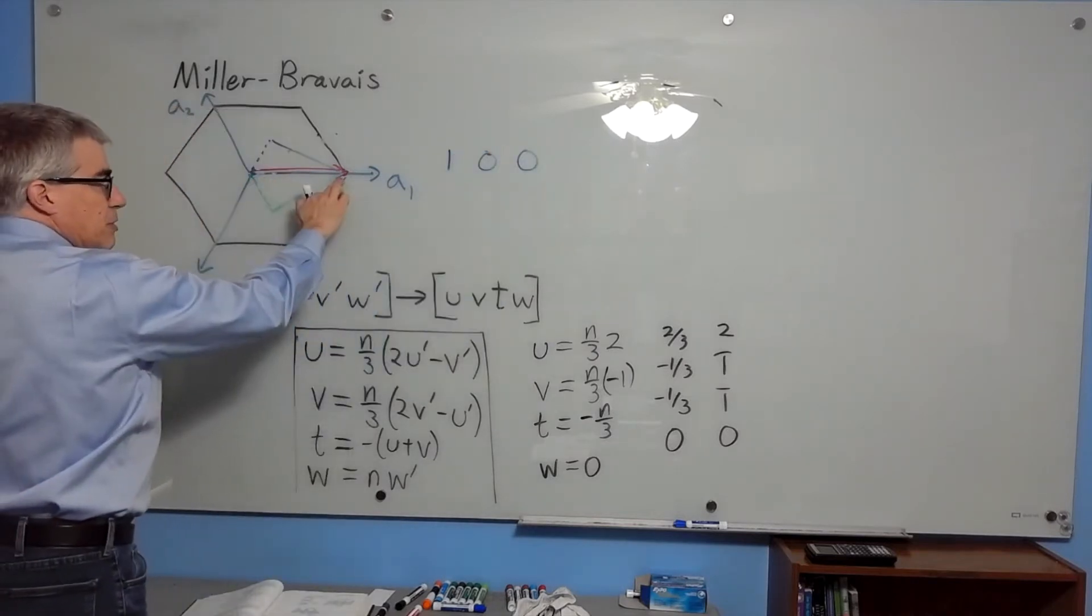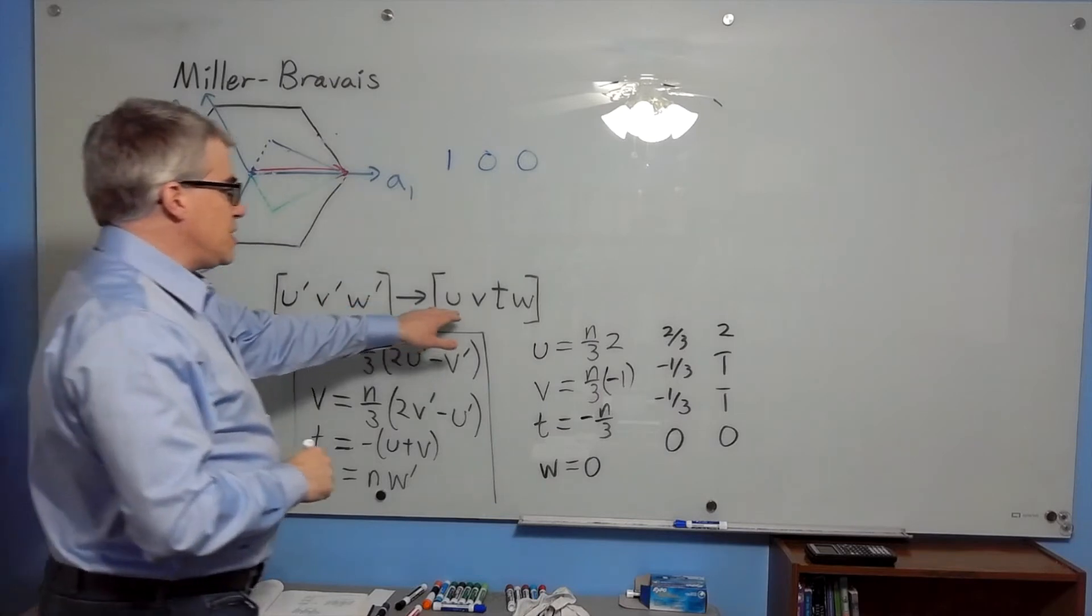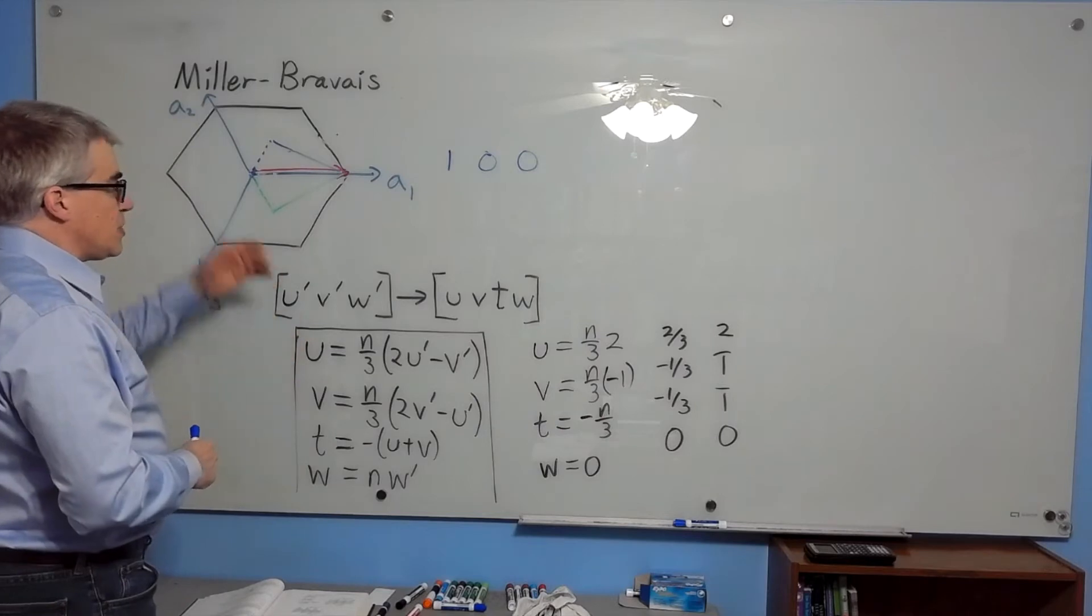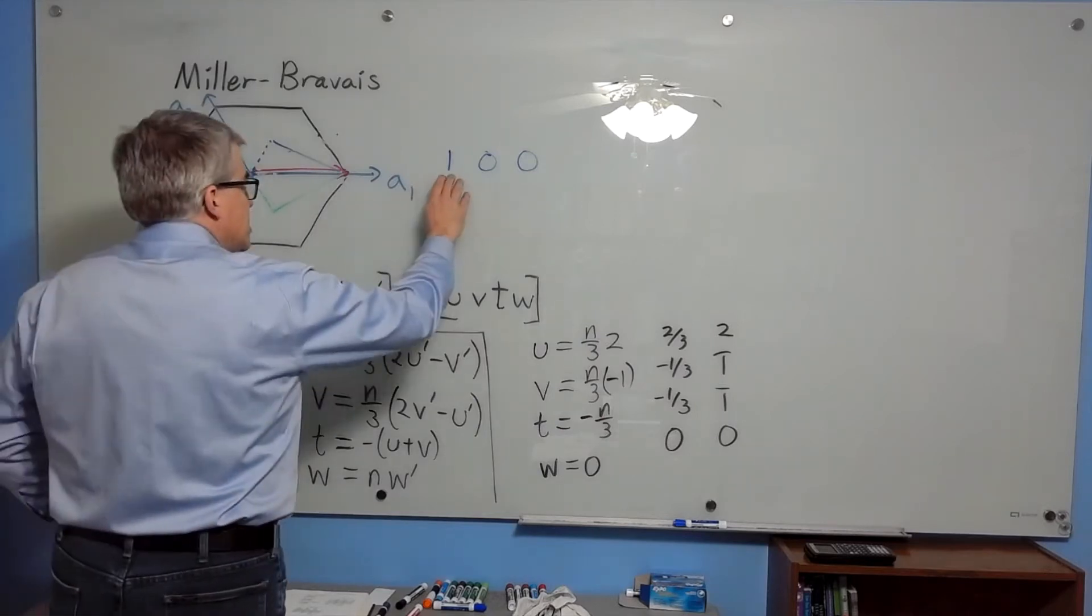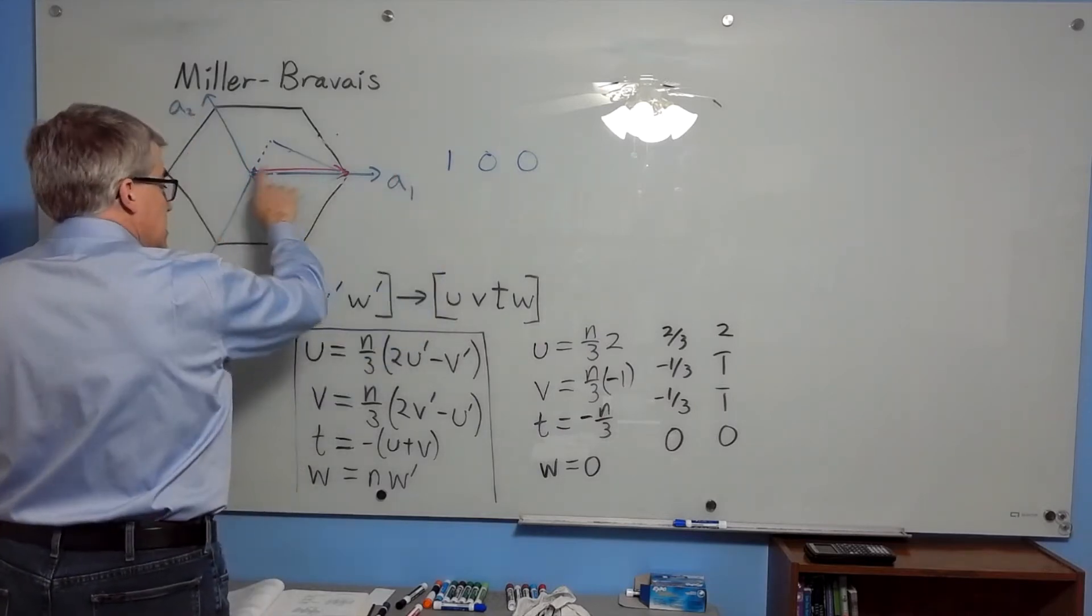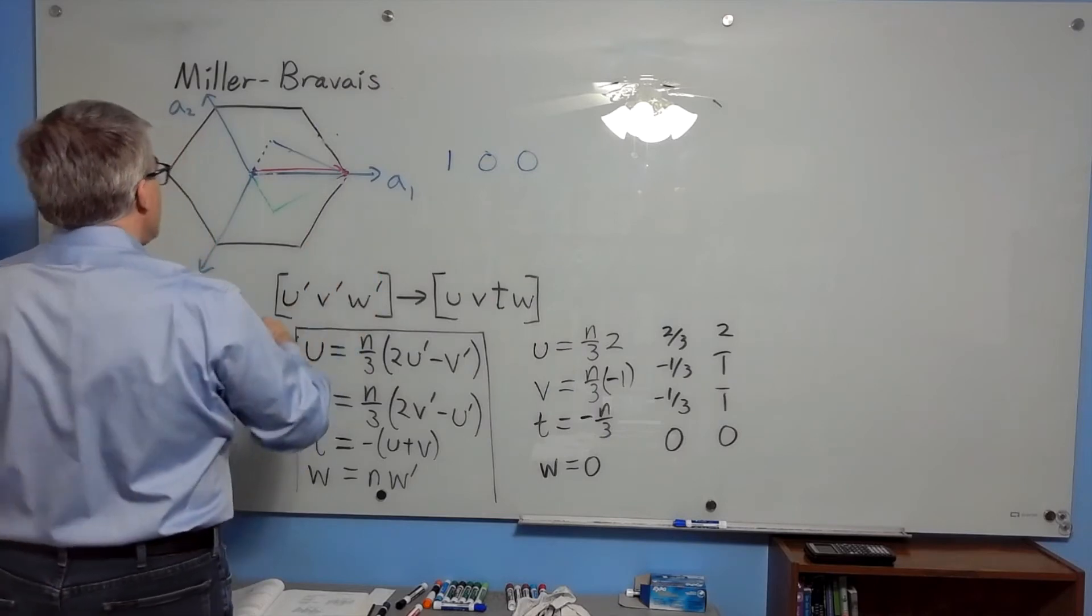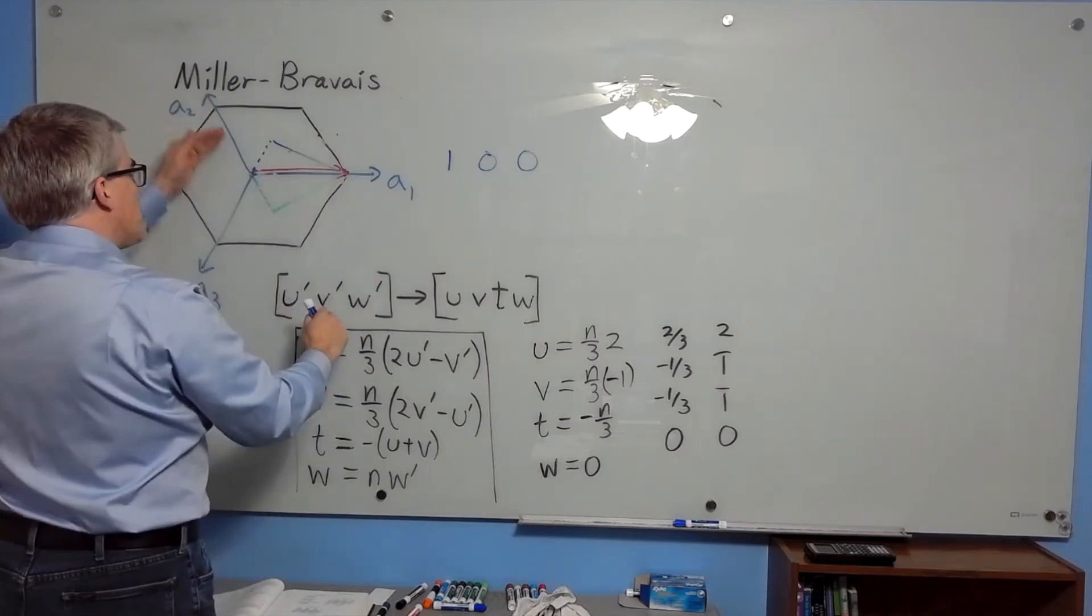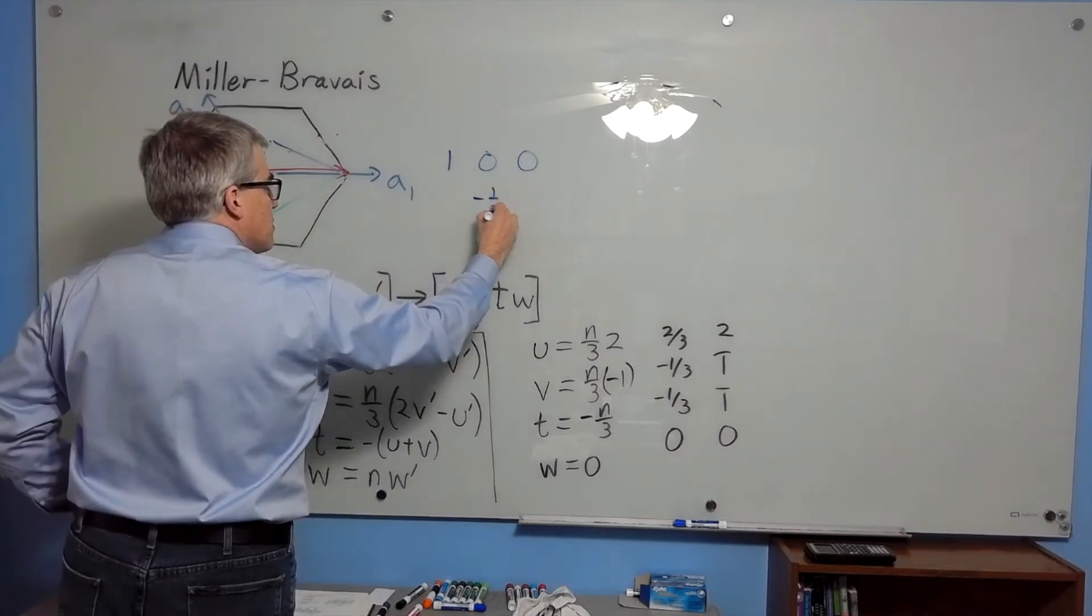So that would be this red arrow here. And then we're going to convert it into u, v, t, w. Here are the formulas that will do it, but I also want to show it conceptually. If we are simply taking 1, 0, 0, then in the a1 direction it's clearly 1. In the a2 direction, you can see that this vector is somewhat negative, so it's got a negative one-half component.